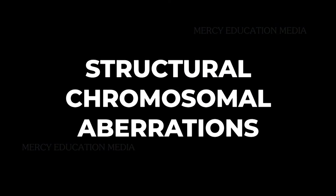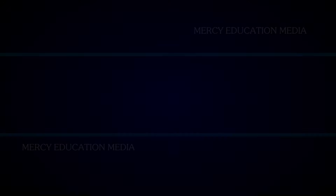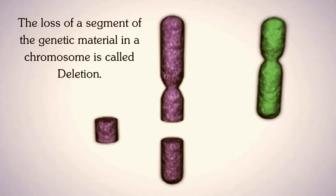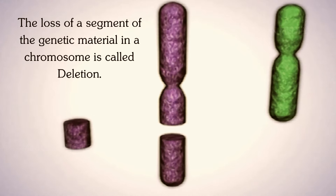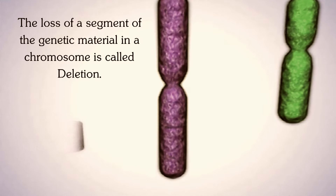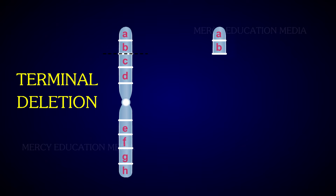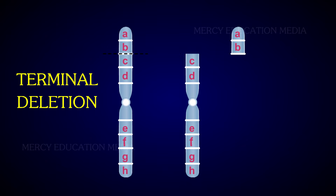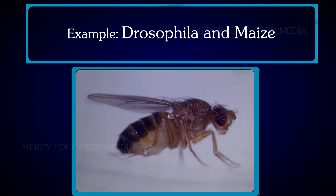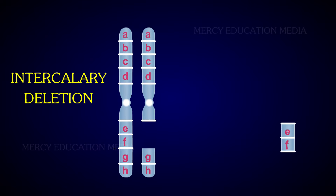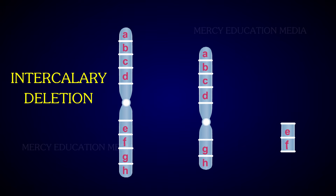Let us see the structural chromosomal aberrations — starting with deletion. The loss of a segment of the genetic material in a chromosome is called deletion. It may be terminal or intercalary. When the deletion occurs near the end of the chromosome, it is called terminal deletion, e.g., Drosophila and maize. When the deletion occurs in the middle of the chromosome, it is called intercalary deletion.